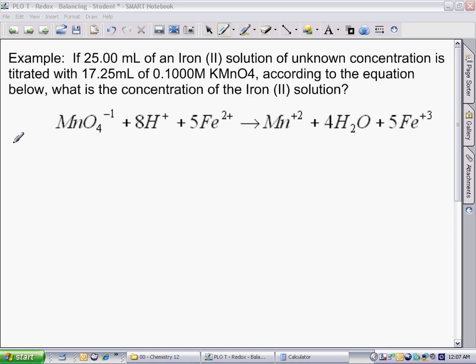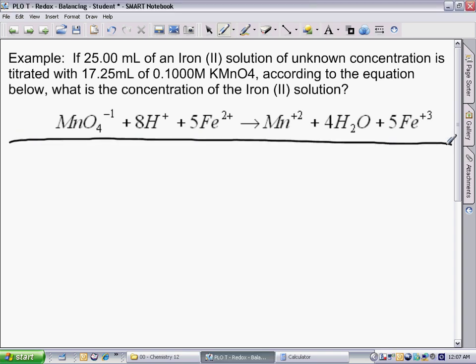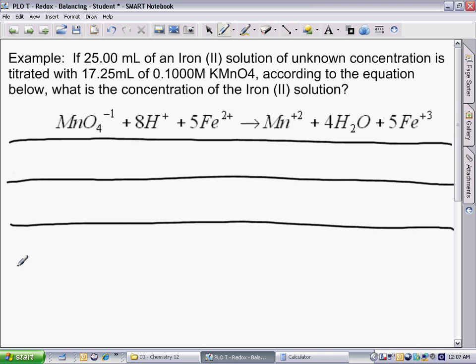One method to accomplish this is by the table method, which I am setting up here. With the table method as a general stoichiometry method, N stands for moles, V stands for volume, and C stands for concentration.